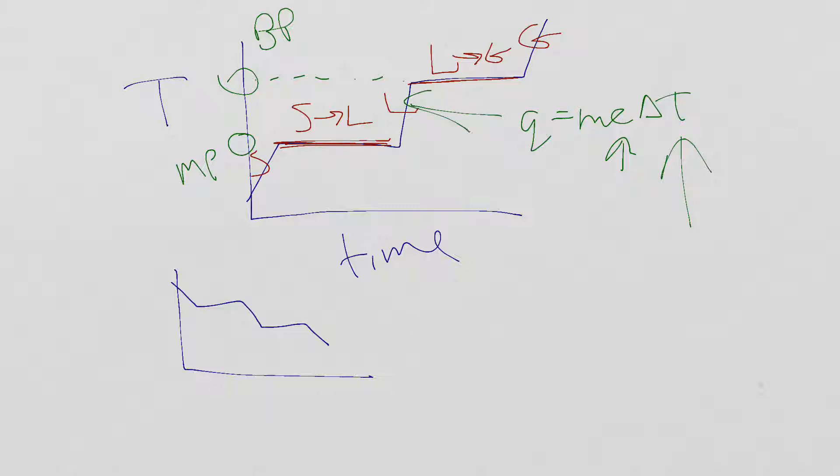The phase change, heat of fusion - remember that means melting. This equation is going to be here. And this equation, q equals m H v for vaporization, would be here where the liquid is boiling.